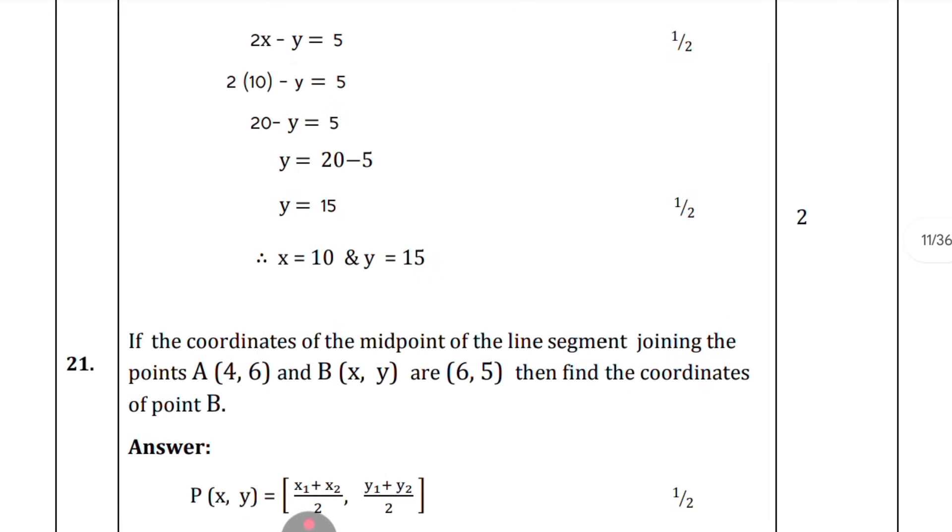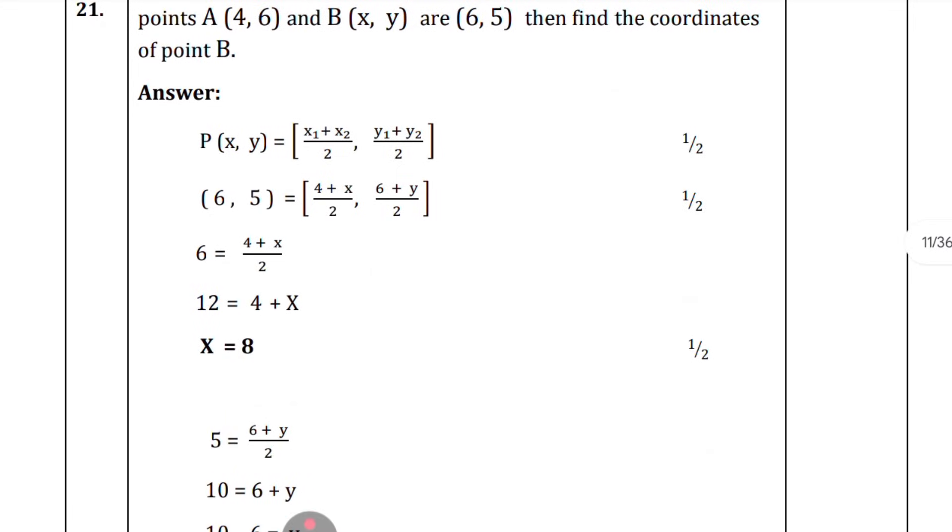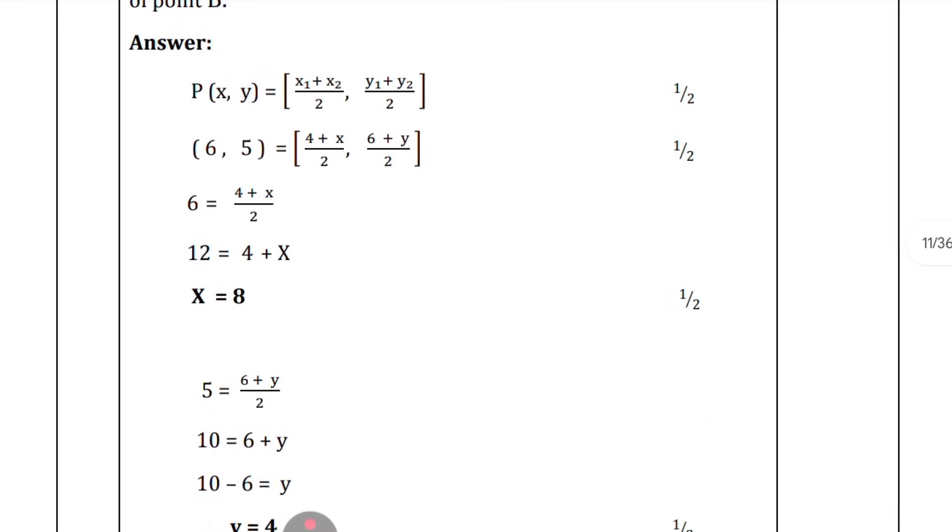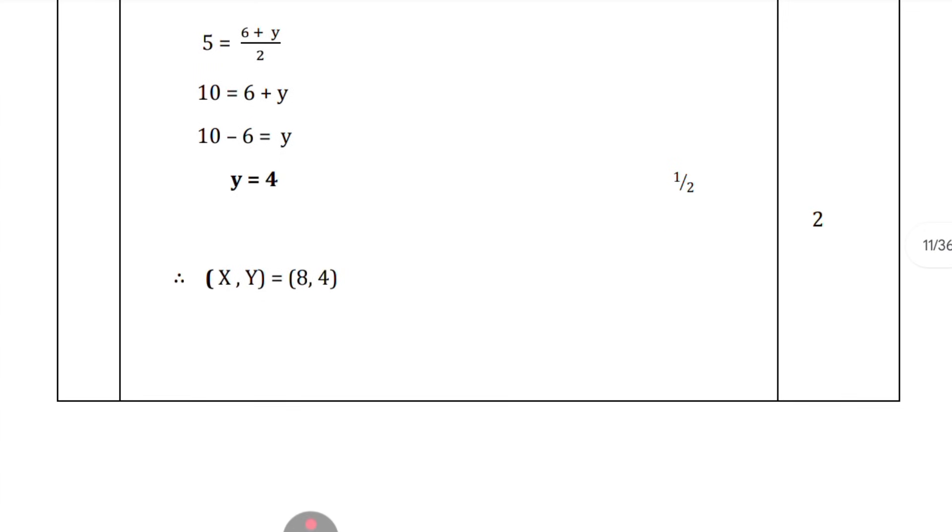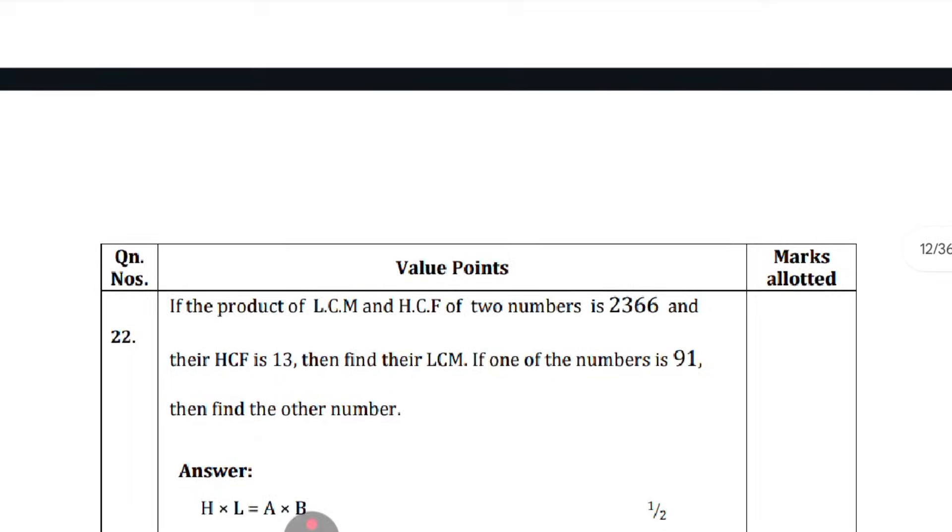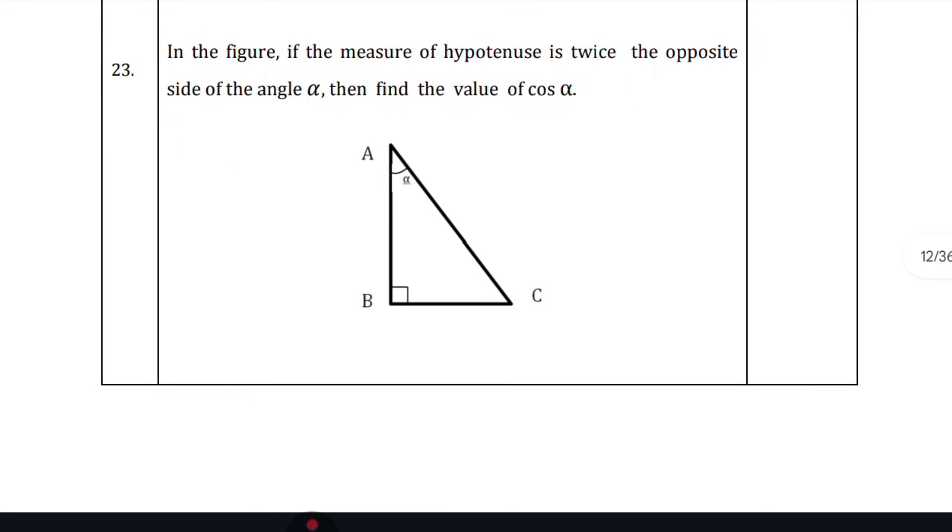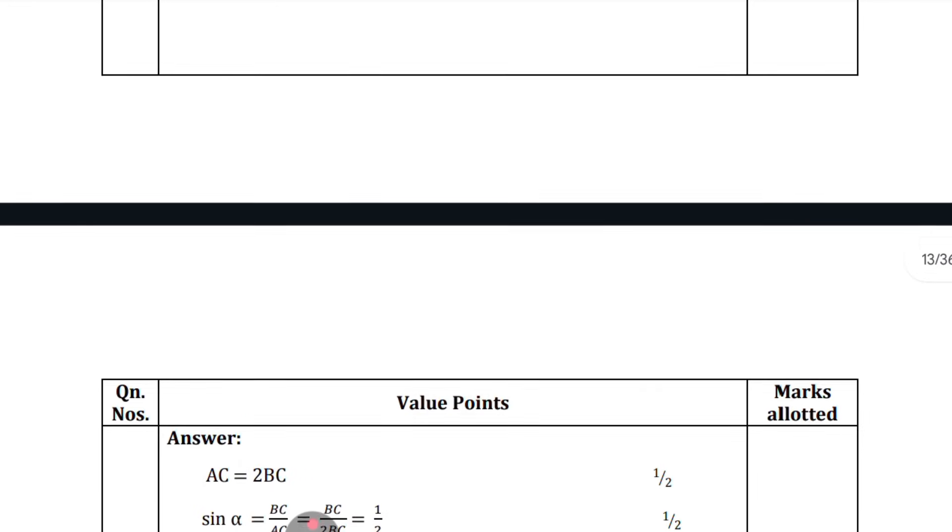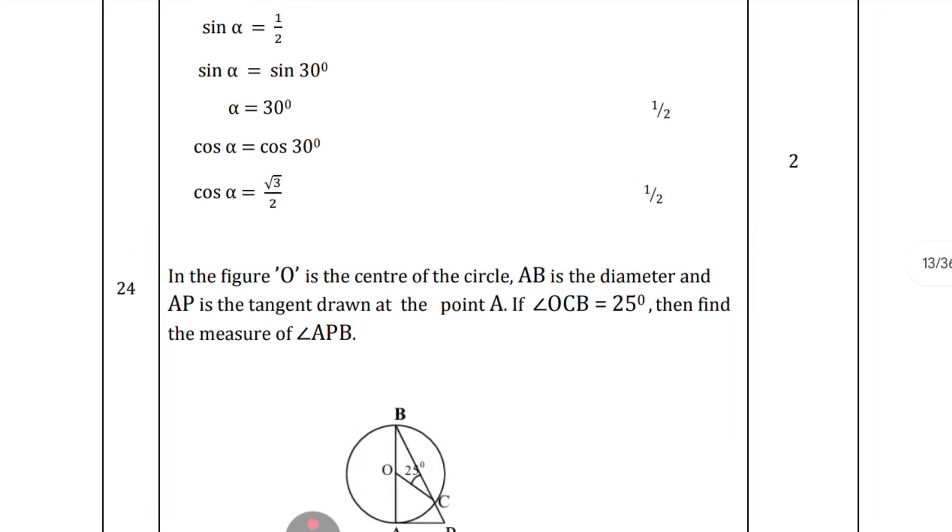This is the coordinate geometry formula - they have given half marks for substitution, half marks for solving, and half marks for the final answer. Totally four half marks are distributed, that equals two marks. This is the twenty-seventh question and this is the answer. This is the twenty-third question from the trigonometry chapter, which is also important.